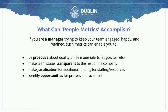So it's people metric stuff. What could this accomplish? Let's say you're a manager, and you're trying to keep your team engaged, happy, and retained. These metrics enable you to do a few things. You can be proactive about quality of life issues for your team — alert fatigue, getting paged too much, toil, lots of manual labor in the day-to-day process. It also makes the team's status transparent to the rest of the company. It allows you to make justification for additional funding and staffing resources. You can identify that you are taking in more work than you're able to do, and also identify opportunities for process improvement.